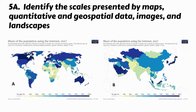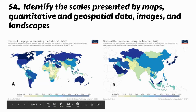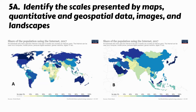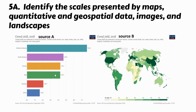Looking at these two maps — 'Share of the Population Using the Internet in 2017' — the scale for map A is global, and the scale for map B is more regional, roughly the Asian continent minus Russia. But the scale of analysis for both of them is the same: country or national, because the data is aggregated at the country level.